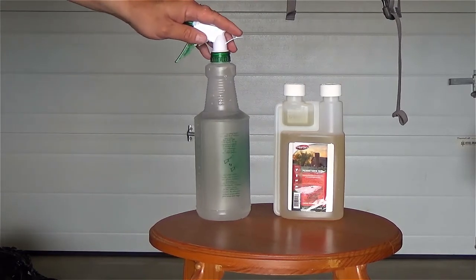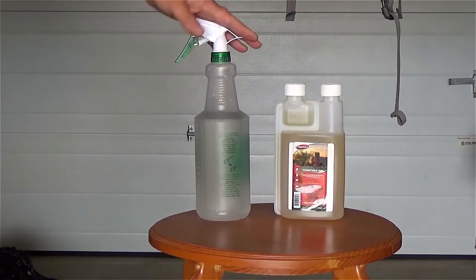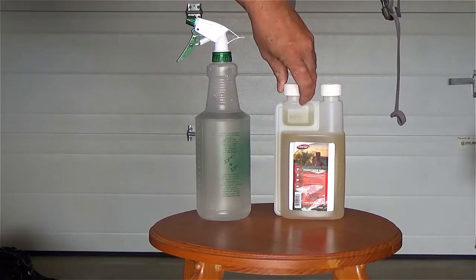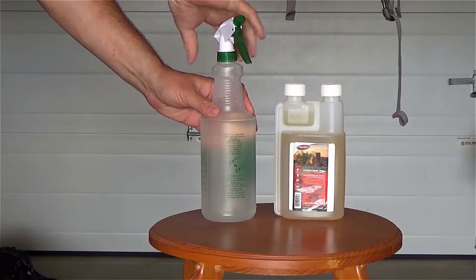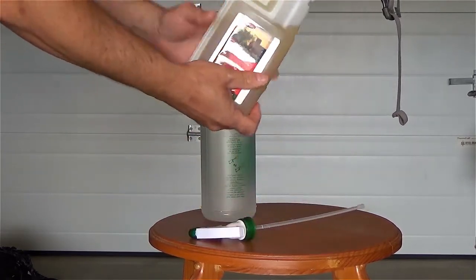I got 32 ounces of water, like I said, already poured in here. I'm going to mix the permethrin. It has a little measuring cup built in. So let's go ahead and do that right now. It's pretty straightforward. Just get this guy here.